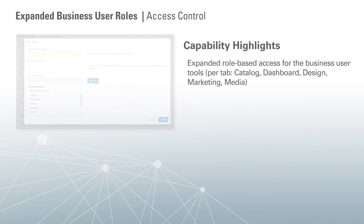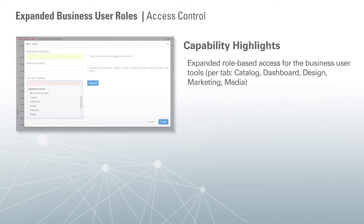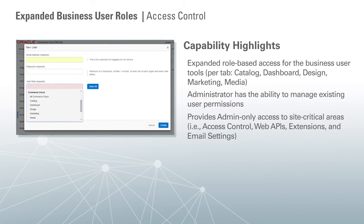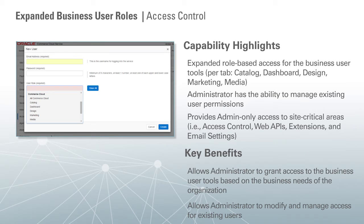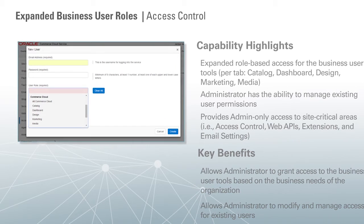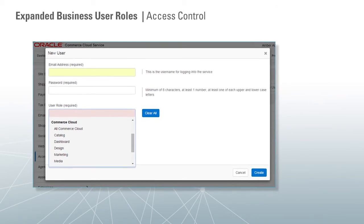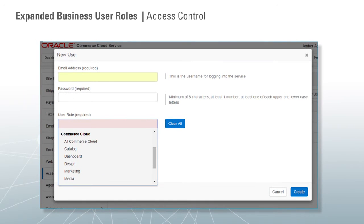I also want to highlight an update to access control in the February 2016 release. Administrators can grant access to the business user tools based on the needs of the organization. There is now expanded role-based access for the business user tools per tab, such as catalog, dashboard, design, marketing, and media. The admin also has the ability to manage existing user permissions. This release now provides admin-only access to site critical areas such as access control, web APIs, extensions, and email settings.